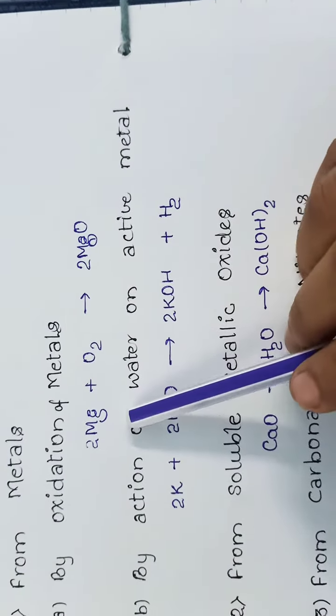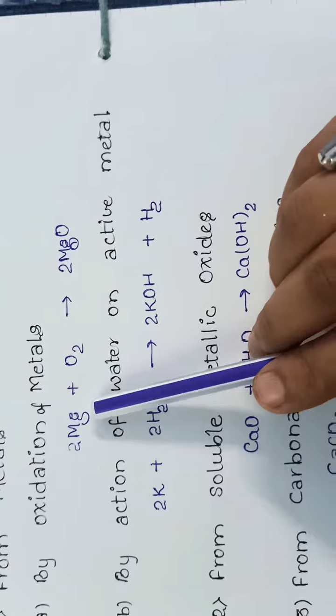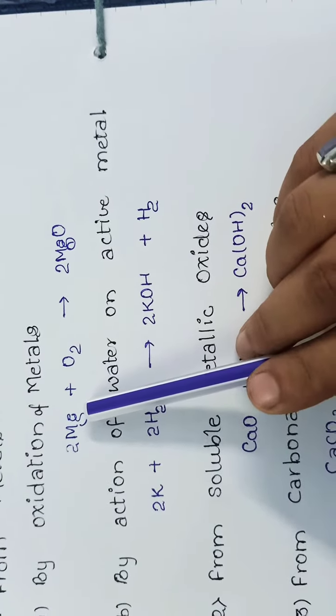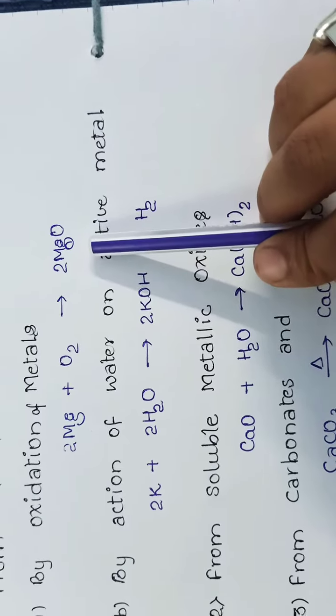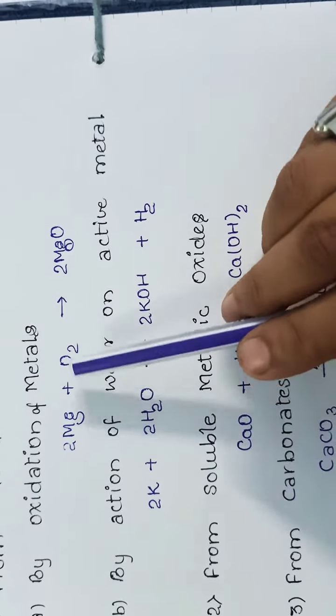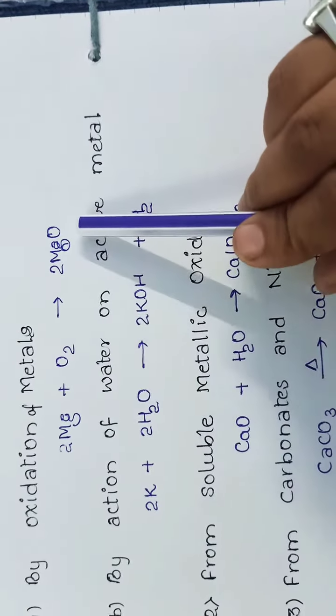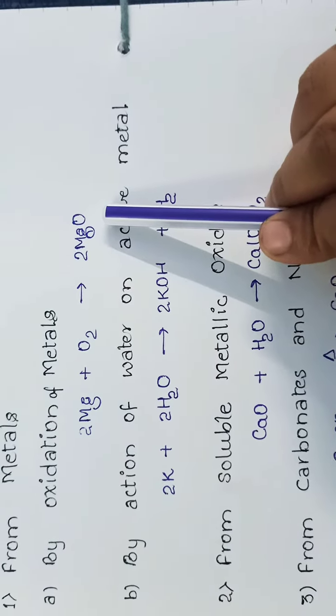First we take active metal like magnesium. When it reacts with oxygen to form MgO, magnesium oxide.